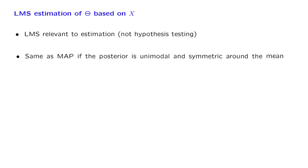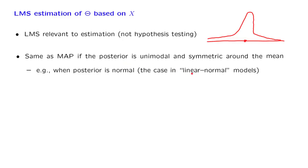A second important comment is that in some cases, the LMS estimates and the MAP estimates turn out to be the same. This happens when the posterior distribution of theta has a single peak and is also symmetric around a certain point — the peak and the conditional expectation coincide at the center of symmetry. One important special case where this occurs is linear normal models, where the posterior distribution is normal, so the MAP and LMS estimates coincide.